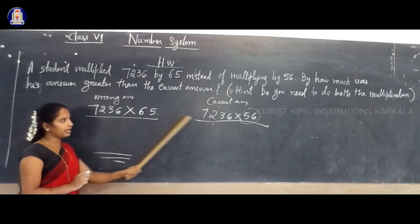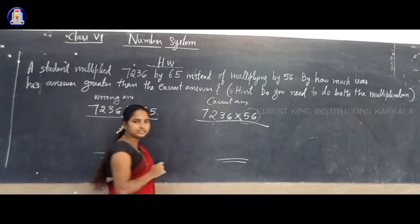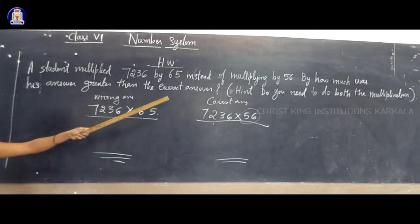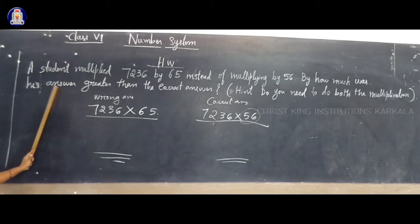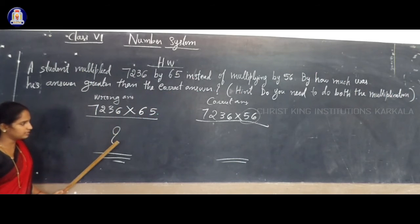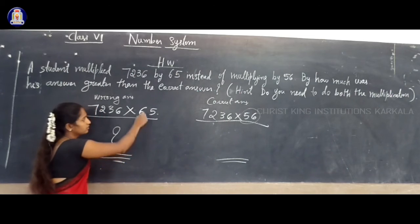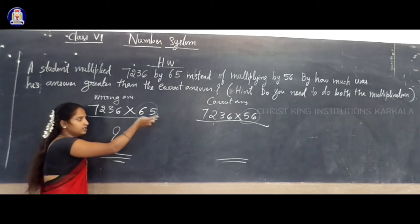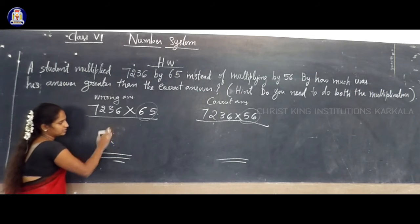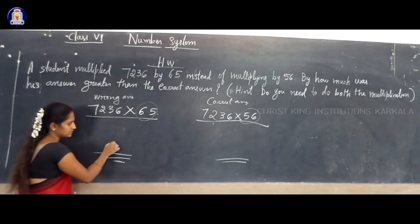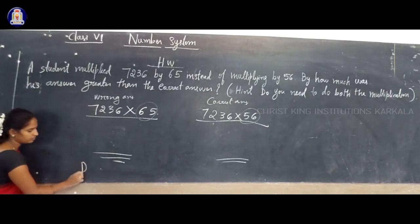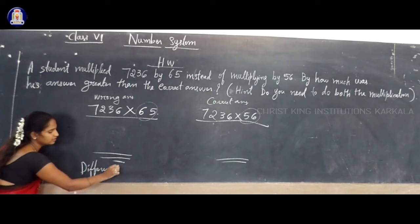Multiply these two numbers and multiply these two numbers. Here you will get one answer, and here you will get one answer. That answer you have to compare. By how much was this answer greater than the correct answer? This answer minus this answer. Since 65 is greater than 56, we definitely get a larger number here. So, from the wrong answer, you have to subtract the correct answer. You have to find out the difference.